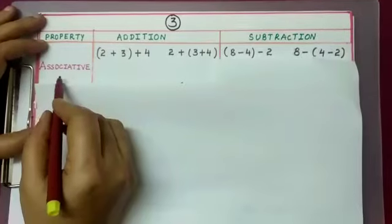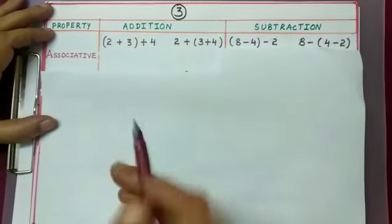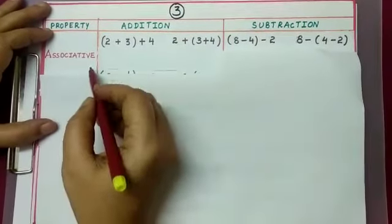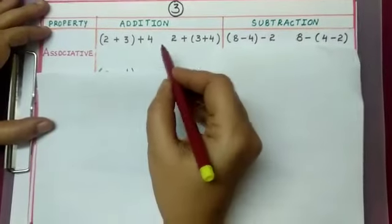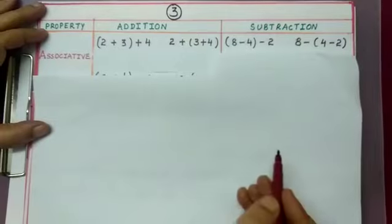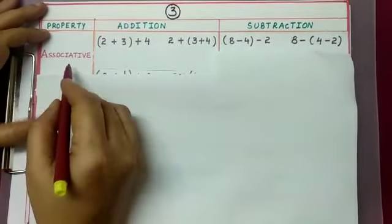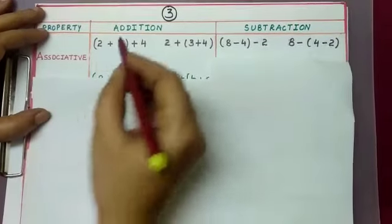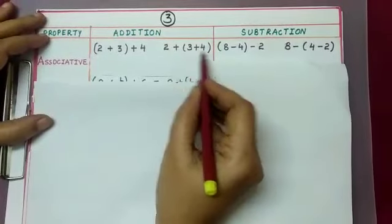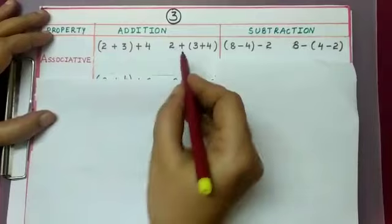Now the third property is the associative property. Take any three integers; if adding, subtracting, multiplying, or dividing them in any grouping order gives the same result, then integers follow associative property. Let us check under addition: (2 plus 3) plus 4 and 2 plus (3 plus 4) — the sum of 2 and 3 is added to 4, and here 2 is added to the sum of 3 and 4.